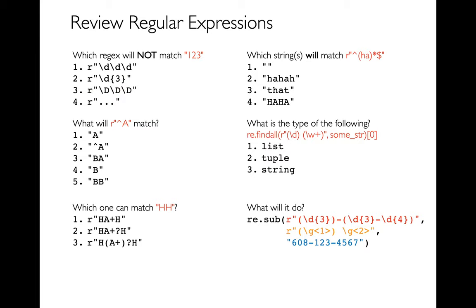Let's jump down to the last one. Dot, dot, dot — remember that dot matches anything except a new line, so that's even more general. That could match something like A, B, C. And so the final answer — the only one that won't match — is when I have capital D. Relative to lowercase d, lowercase d is the meta character for digits, and uppercase D is the opposite of that. It's non-digits.